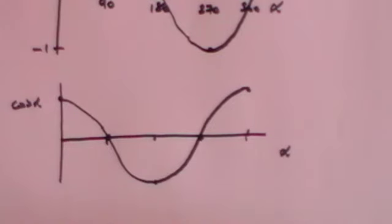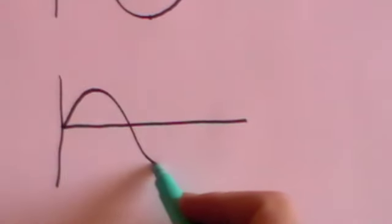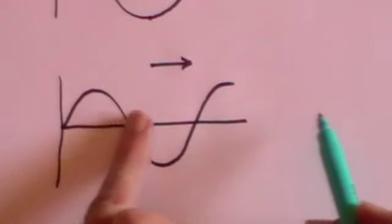Why did I do all that? Because waves are critically important in physics — they crop up all over the place. So let's understand something about moving waves. Moving waves are a bit like the waves on the sea; they roll towards the shore. Here are my waves, and they're travelling in this direction — the whole wave is moving along.